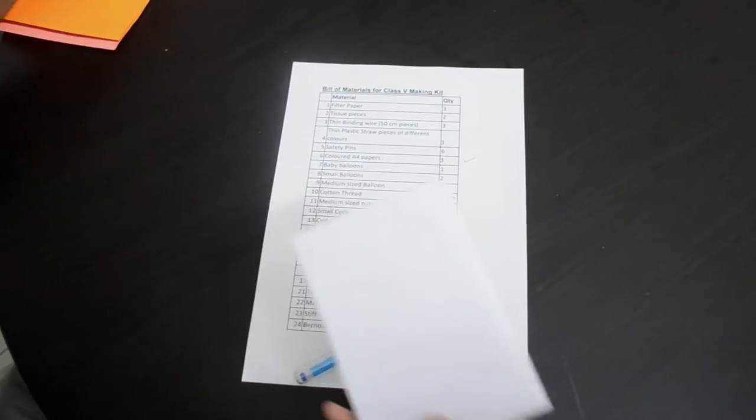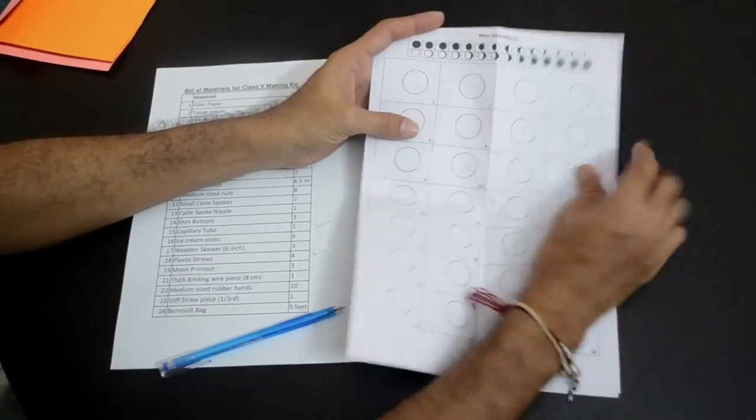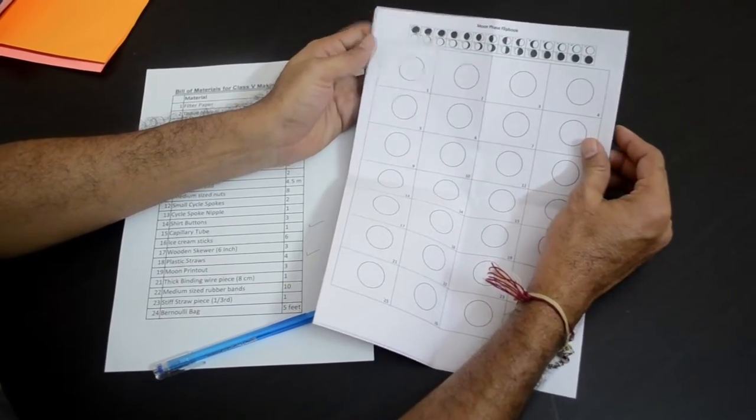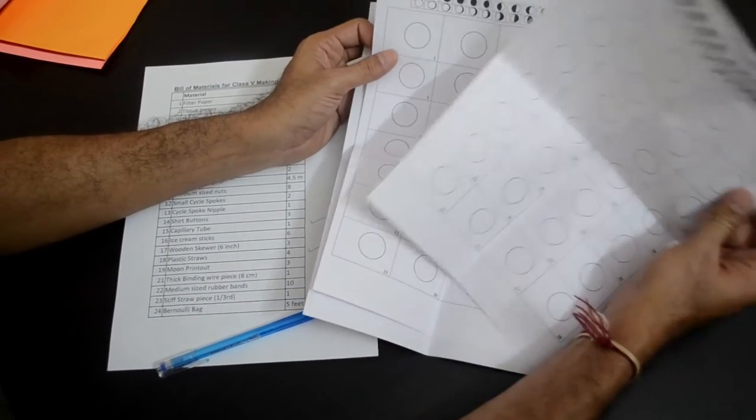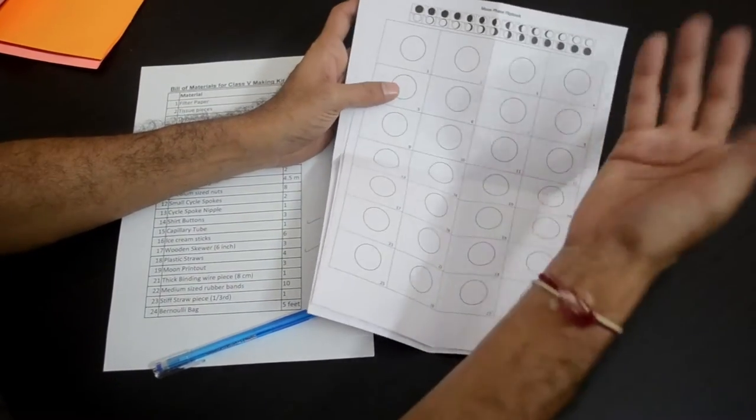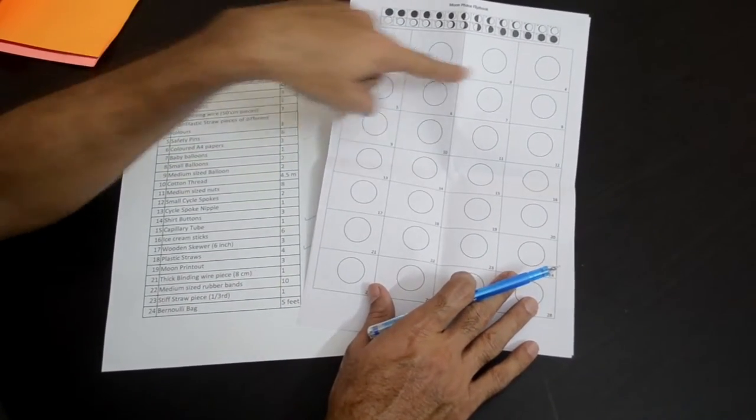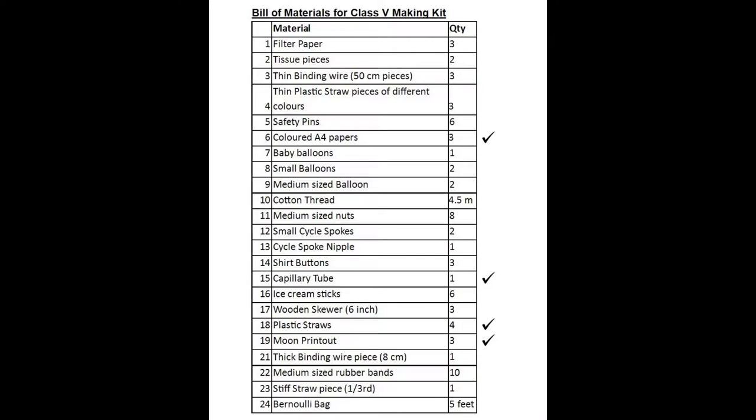Continuing with the bigger items, you would also find some printouts named as moon phase flip book. You will need these printouts for the moon flip book activity. We have kept 3 printouts, so 3 of you can do this activity. You will have to fill up these shades to make the flip book. That is item number 19 named as moon printout in our bill of materials, 3 of them.